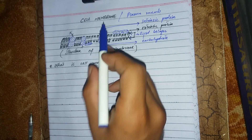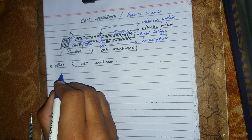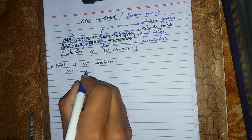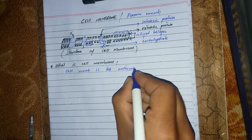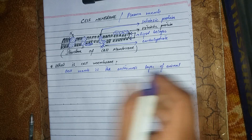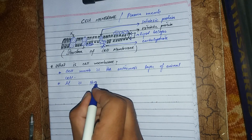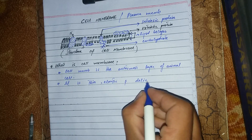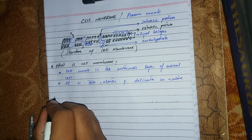We are going to study about cell membrane, also known as plasma membrane. Cell membrane is the outermost layer of animal cell. It is thin, elastic, and delicate in nature.